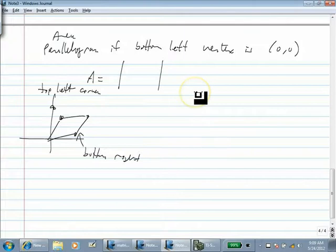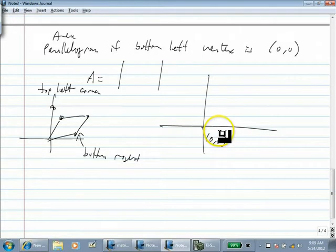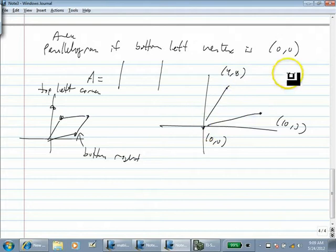So for example, if I take a parallelogram that has (0,0) as its bottom left, (10,3) as its bottom right, (4,8) as its top left, and the other point, it doesn't matter, but it's determined, it happens to be (14,11).